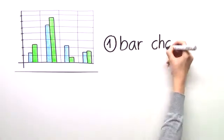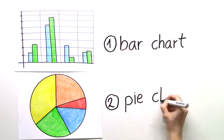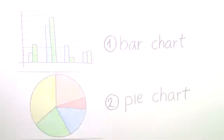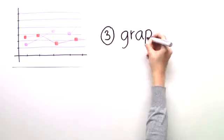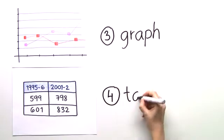Type 1, the bar chart. Type 2, the pie chart. Type 3, the graph. And type 4, the table.